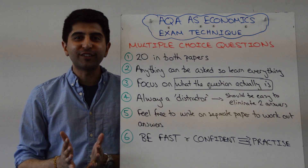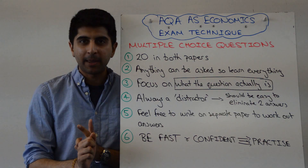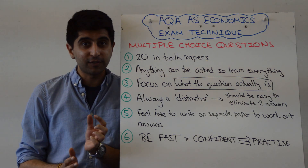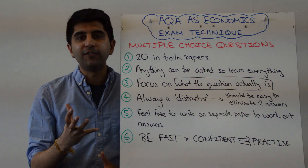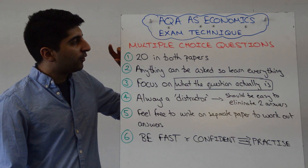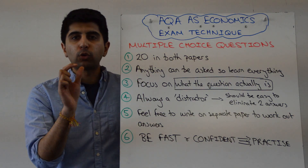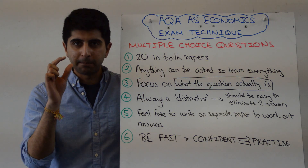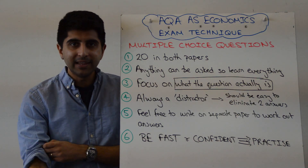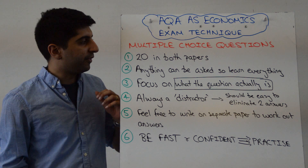Hi everybody. A really important start to both your AQA micro and macro AS papers will be these multiple choice questions. Really important because there are lots of them and you need them if you're going to score what you want at the end of this examination. There are going to be 20 multiple choice questions in your micro and 20 in your macro. They are worth a lot, so you need to do well in them. Here's some guidance on how to do really well on these questions.